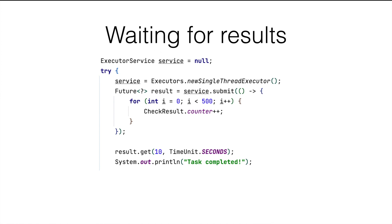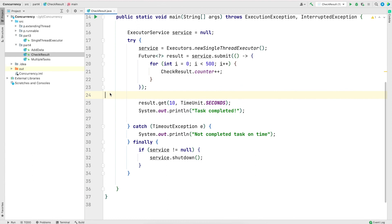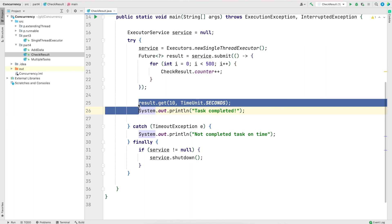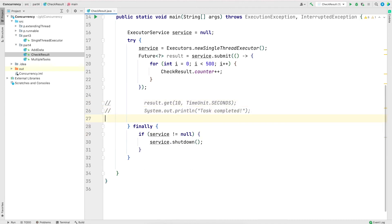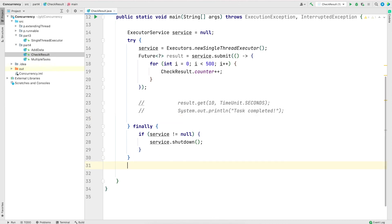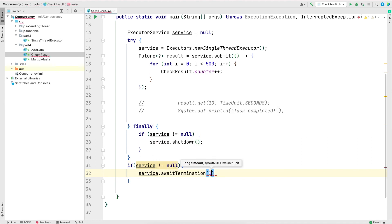There is one more topic in the book I've skipped over — let's look at it for completeness. In a previous example we submitted a Runnable task and used the Future object to wait on it to finish. If you don't care about the value returned from the task, there is another way to achieve the same functionality. Back in the CheckResult class, I'll comment out the get method and the print statement, and since get is gone we don't need the TimeoutException anymore. To wait for the task to finish we can use the executor service's awaitTermination method, where we can also give a timeout for how long we want the executor to wait.